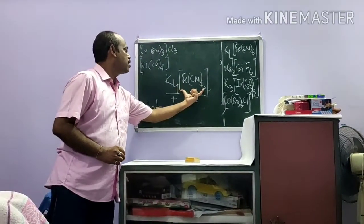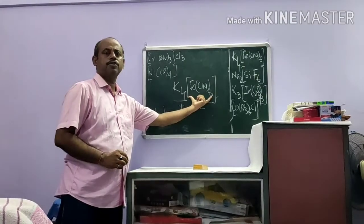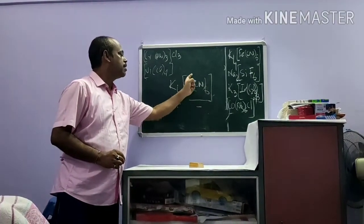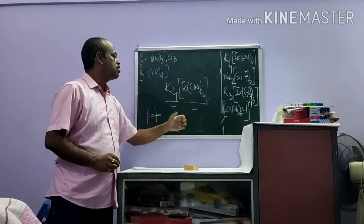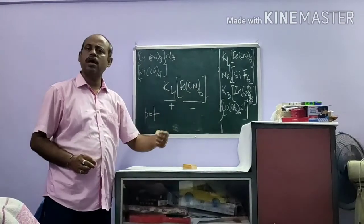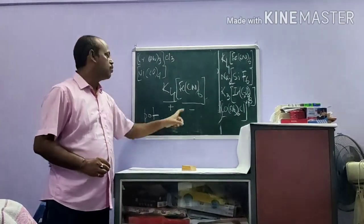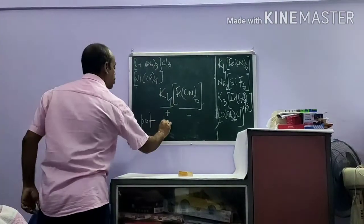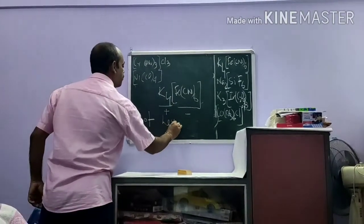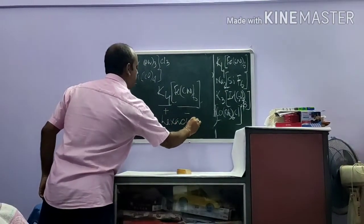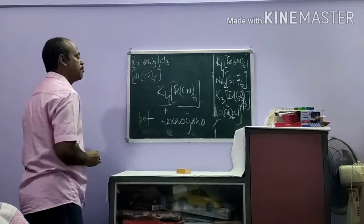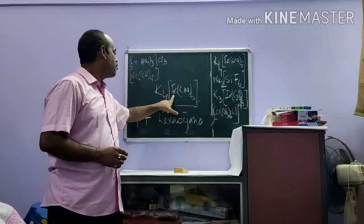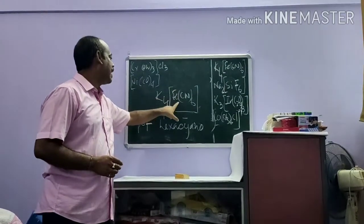Then you enter the coordination sphere. Here we have the ligand CN, and we know CN is negative and it is known as cyano. So we have six CN, so it is hexacyano. The name so far is: potassium hexacyano.